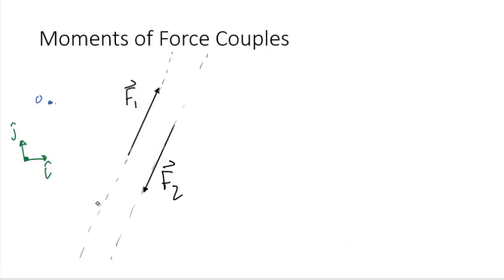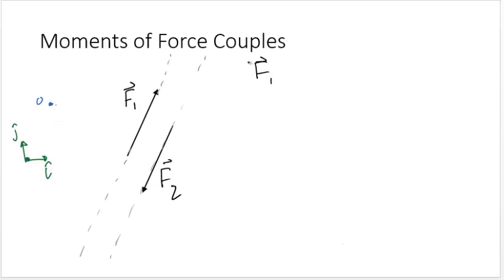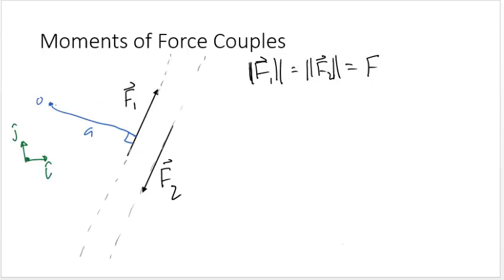Two equal and opposite forces that are not co-linear create what is called a force couple. Let us find the moment created by the forces in the system about an arbitrary point. The magnitude of F1 is equal to the magnitude of F2 — we'll call this F for simplification. Let's call the perpendicular distance from O to F1's line of action 'a', and the perpendicular distance from O to F2's line of action would be a plus an additional distance d, which is the perpendicular distance between F1 and F2.